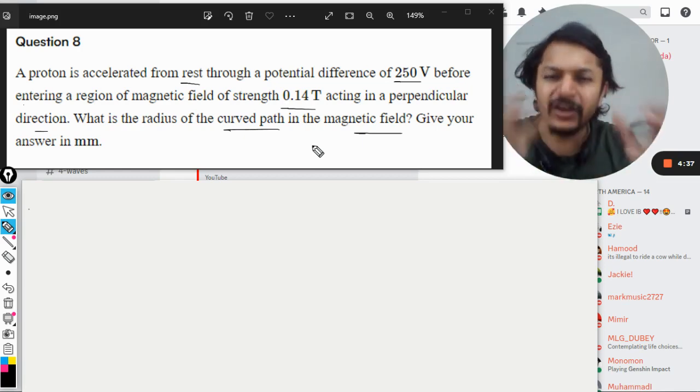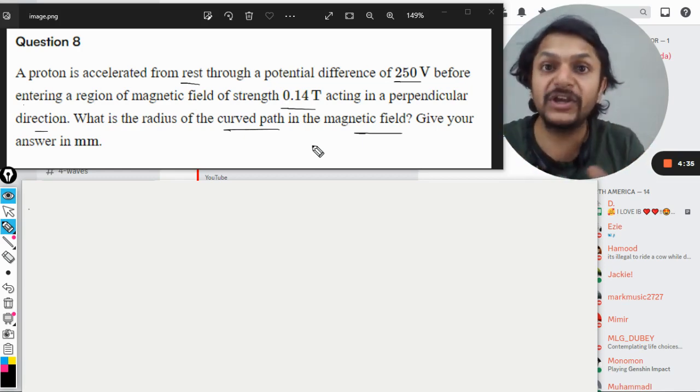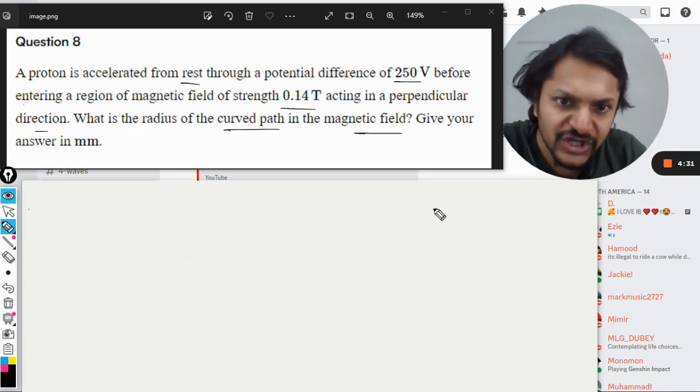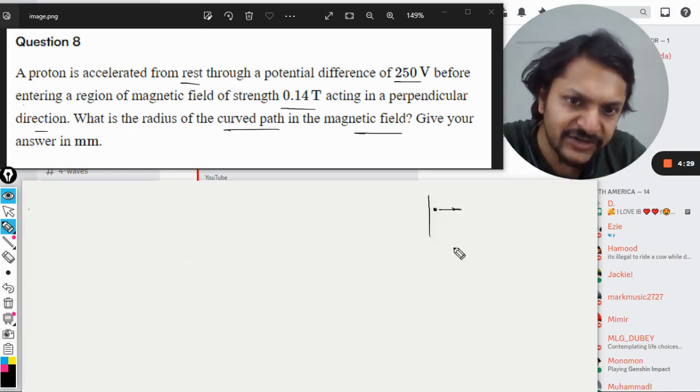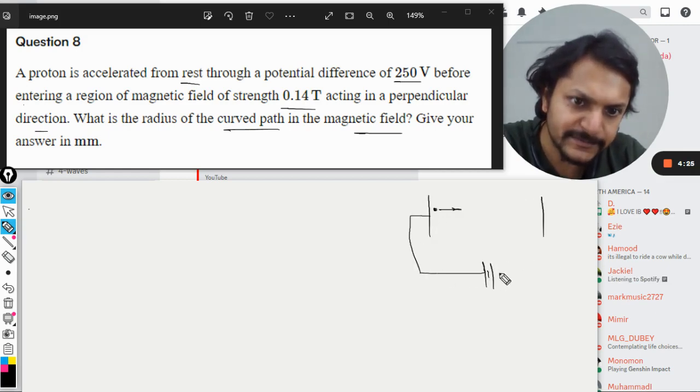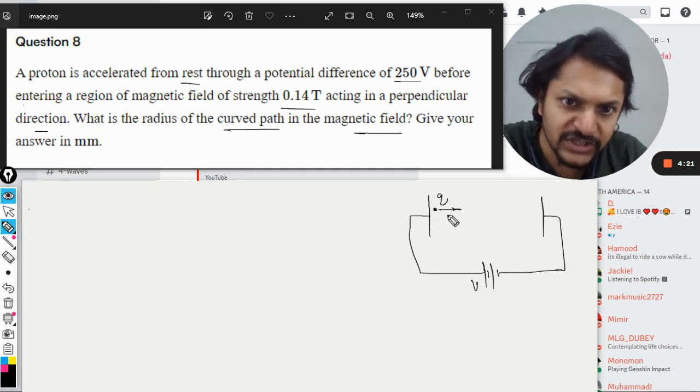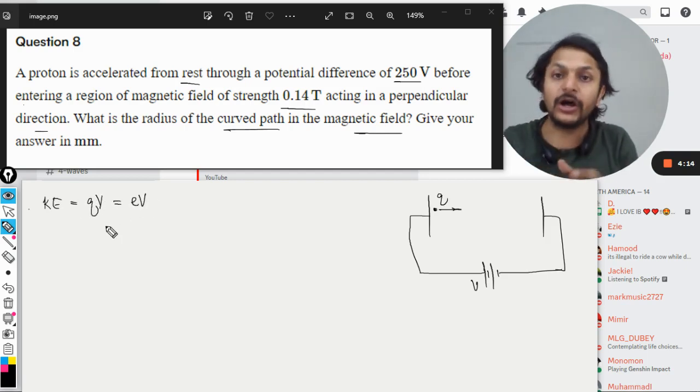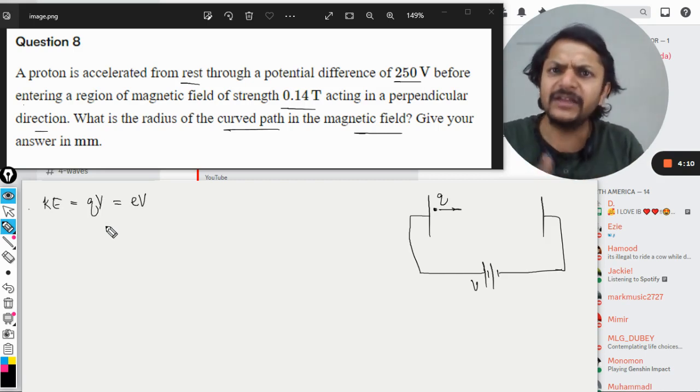This question is very important. There are two big concepts involved. The first concept is whenever a charged particle is accelerated through a potential difference, where V is the voltage and Q is the charge, the gain in kinetic energy is equal to QV. From here you find the formula for kinetic energy.